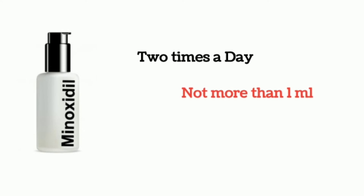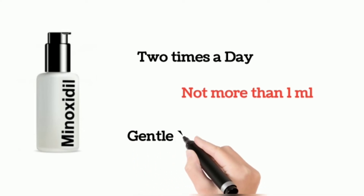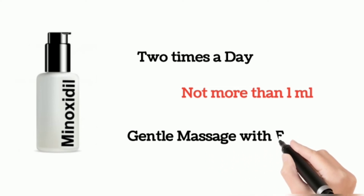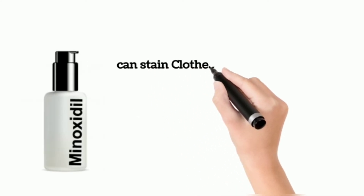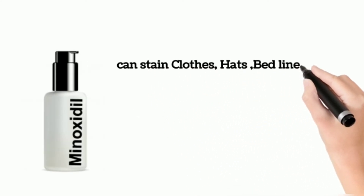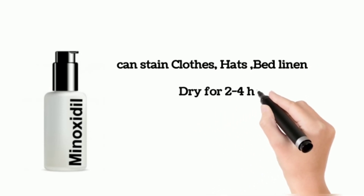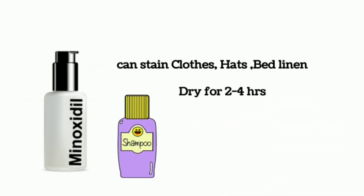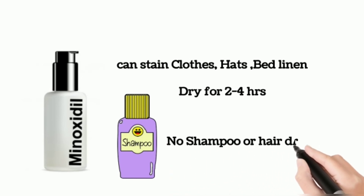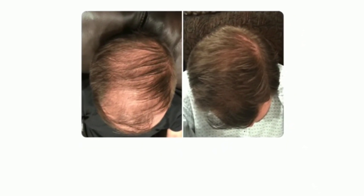After applying minoxidil, a gentle massage should be done and hands should be washed. Minoxidil can cause staining of clothes, hats, bedlinen, and so on, so we should wait and allow it to dry for at least 2 to 4 hours. We should not shampoo our hair or blow-dry for at least 4 hours after applying minoxidil.